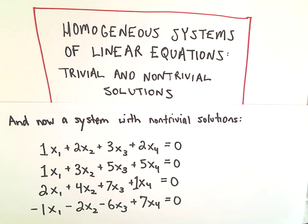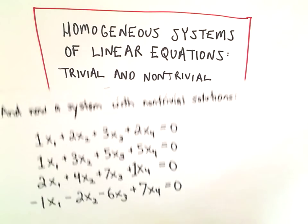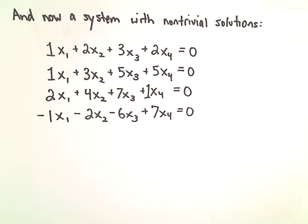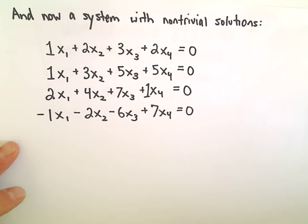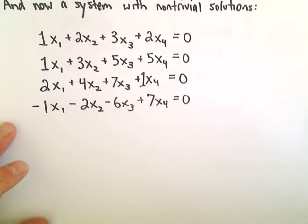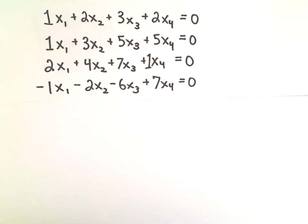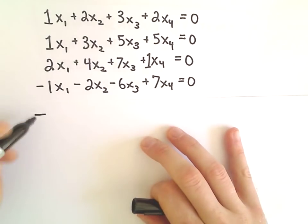All right, so as promised here, we're going to do a system of equations, a homogeneous system of equations that has a non-trivial solution. So again, I'm going to use some row reduction. If you feel confident about your row reducing abilities, certainly you may skip ahead because grinding this down a little bit may be a little bit like watching grass grow. But you've got to do what you've got to do.